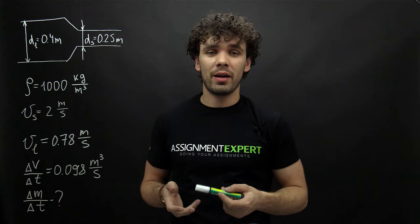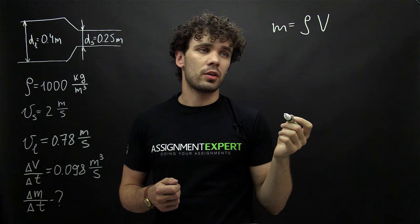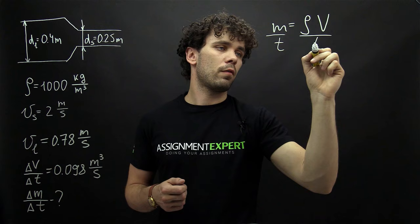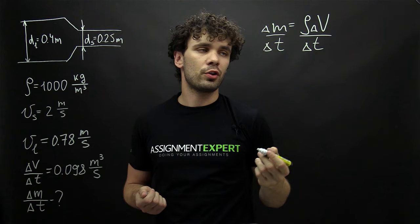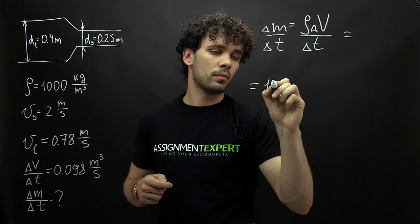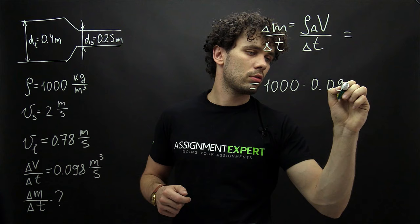Now we move on to our last task: the mass flow rate. First let's recall the formula relating mass to volume: M equals rho times V. If we divide both sides by T, we get that our mass flow rate equals rho times the volume flow rate. So we just need to put our values into the formula: 1000 times 0.098, which gives us 98 kilograms per second.